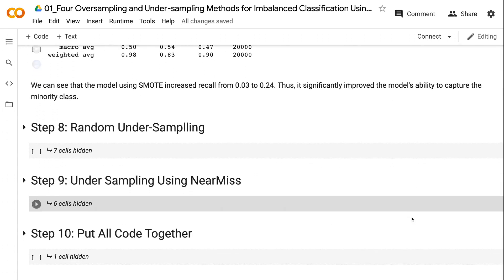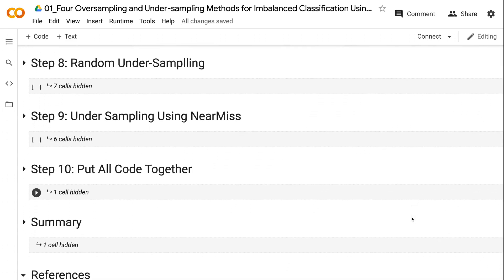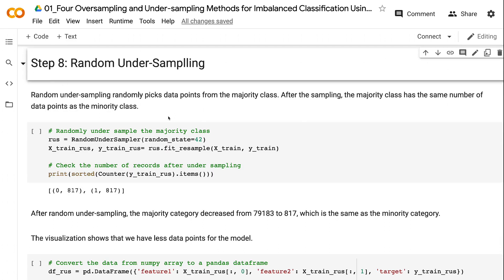We have tried two oversampling techniques, random oversampling and SMOTE. Now let's try the undersampling techniques. Let's check out random undersampling first. Random undersampling randomly picks data points from the majority class. After the sampling, the majority class should have the same number of data points as the minority class. We set a random state for the random undersampler so we can reproduce the same samples, then run the fit resample on the training dataset.